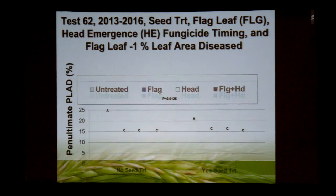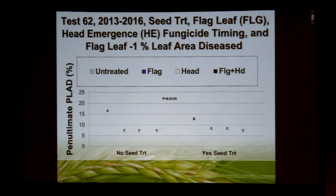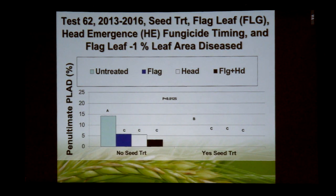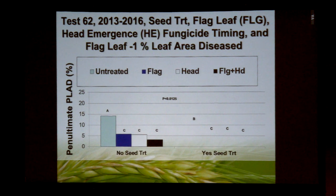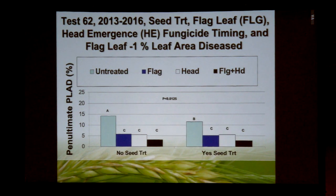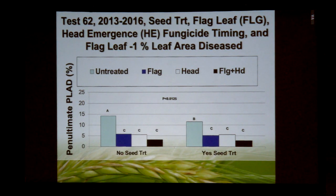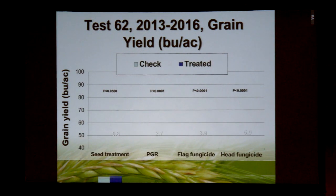We did see some interactions: comparing no seed treatment versus seed treatment, and whether we sprayed fungicide at flag, at heading, or both — the dual application. There was a significant reduction in disease, but no real difference between the three timing options: single at flag, single at head, or the dual application. You can see the impact of the seed treatment on leaf disease at the end of the growing season, but it was really the later applications of fungicide that provided the best level of control.